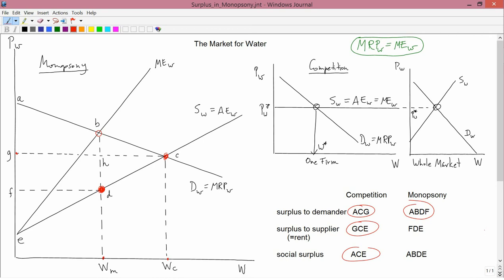So the surplus to the demander is below the demand curve and above the price line. The price line is FD. So we're looking at below the demand curve and above the price line. And so you can see that that area is ABDF.